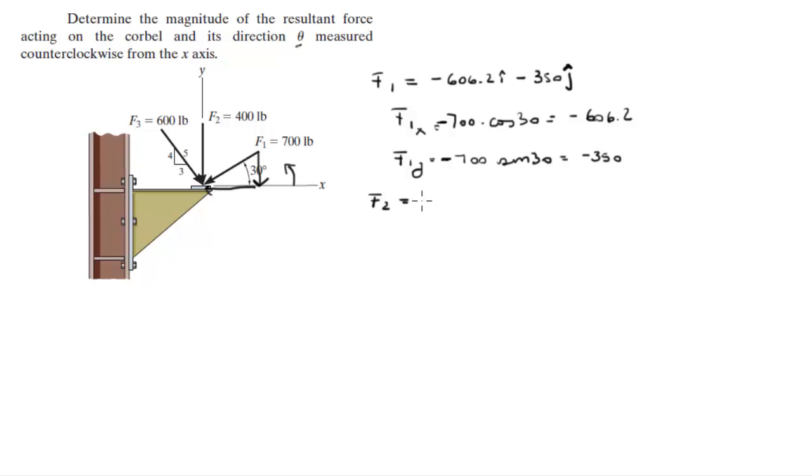F2 is very easy. The x is 0 because it's going straight down, it's not going left or right, and the y is negative 400 because it's going 400 straight down.